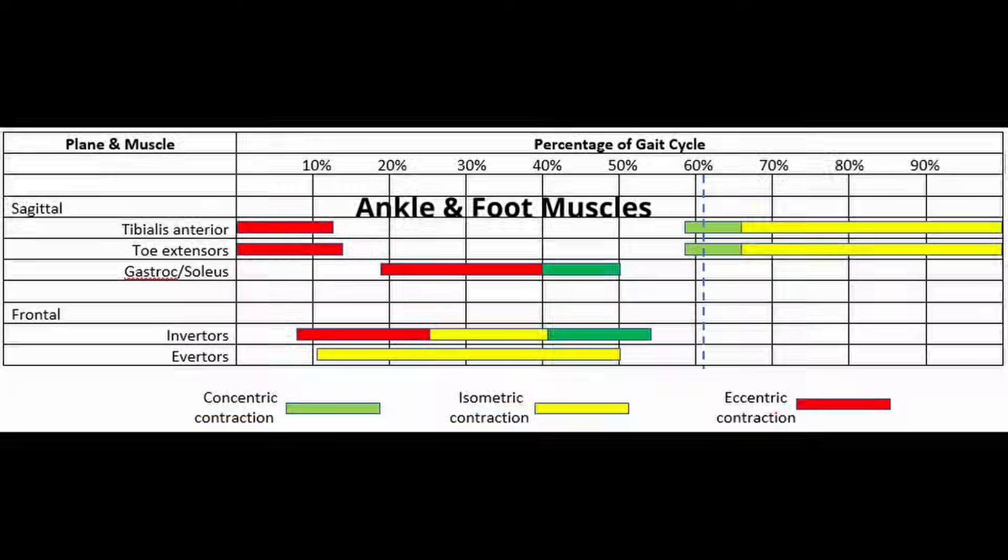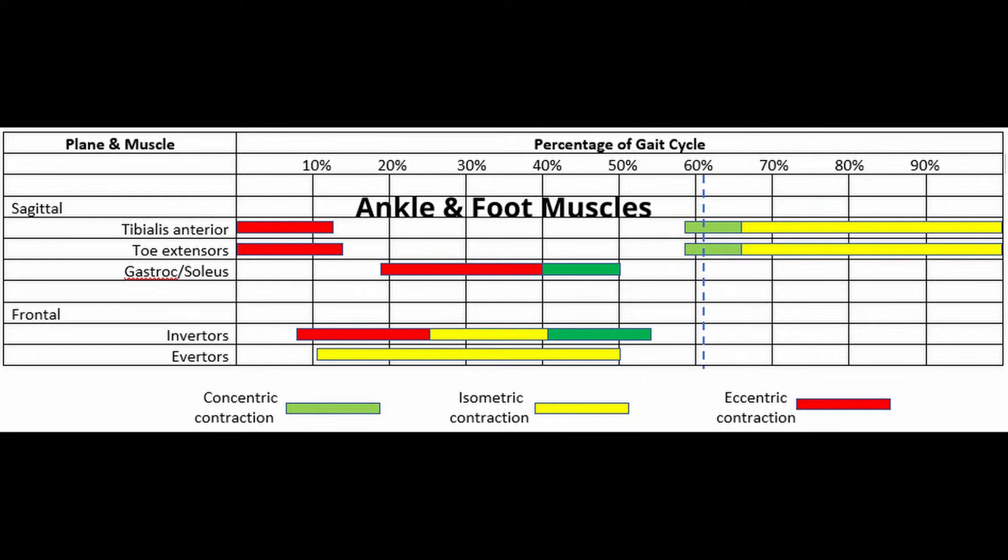This chart is a graphical representation of the muscle activity at the ankle and foot during the gait pattern. Eccentric muscle contractions are shown in red, isometric in yellow, and concentric muscle contractions in green. The sagittal plane is represented by our dorsiflexors, plantar flexors, and our toe extensors.